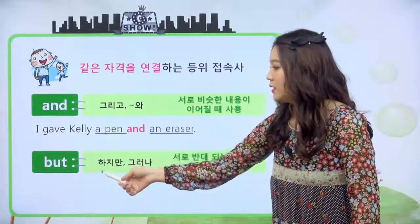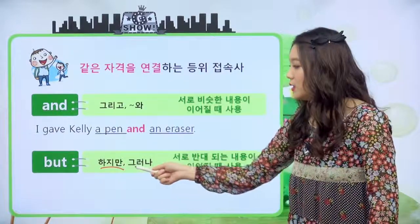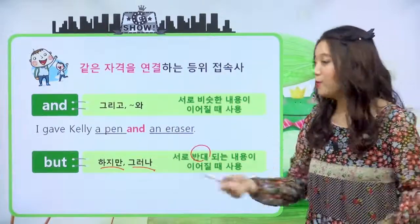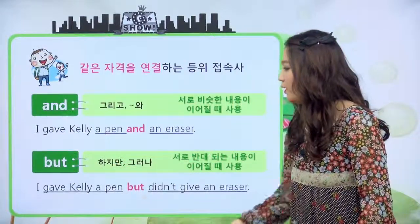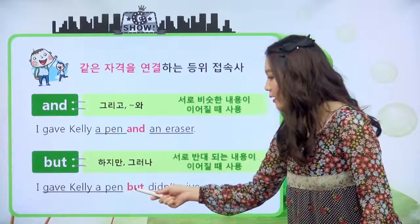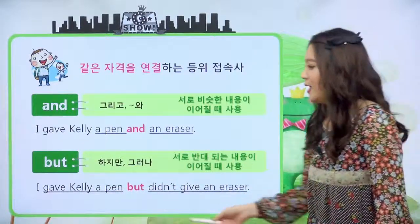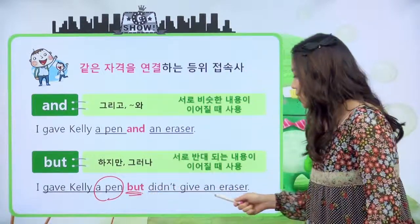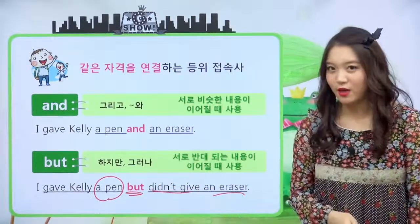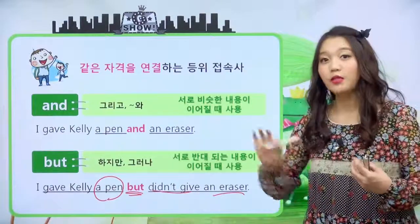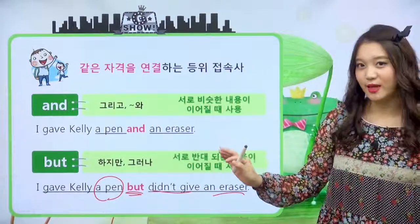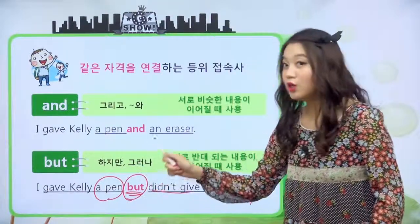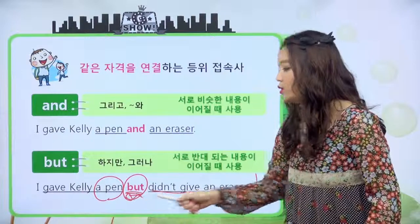but을 한번 볼게요. but은 해석이 하지만, 그러나 이렇게 해석이 되고요. 서로 반대되는 내용이 이어질 때 but을 사용합니다. 예를 들면 I gave Kelly a pen but didn't give any eraser. 나는 켈리에게 펜을 주었다. 하지만 지우개는 주지 않았대요. 서로 반대되는 내용이 이어질 때 가운데 but이 온다.